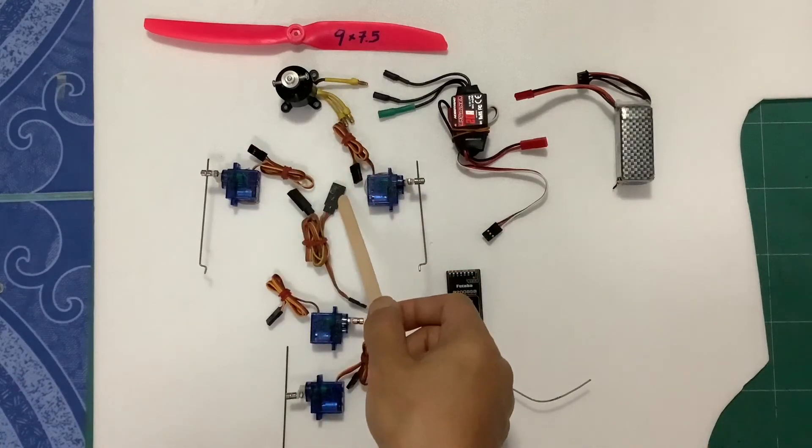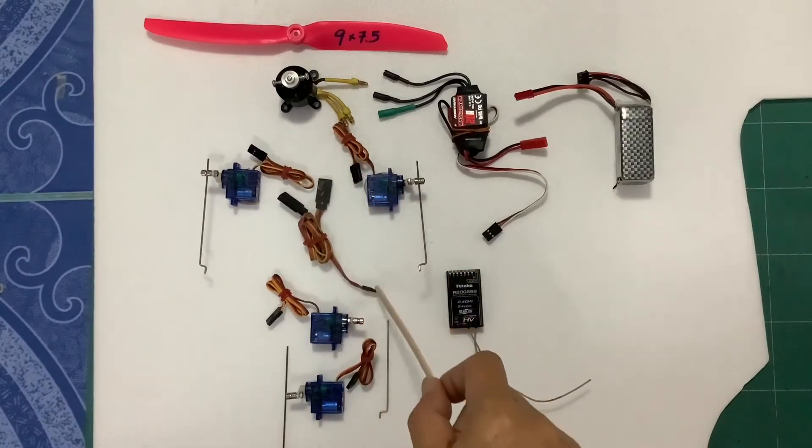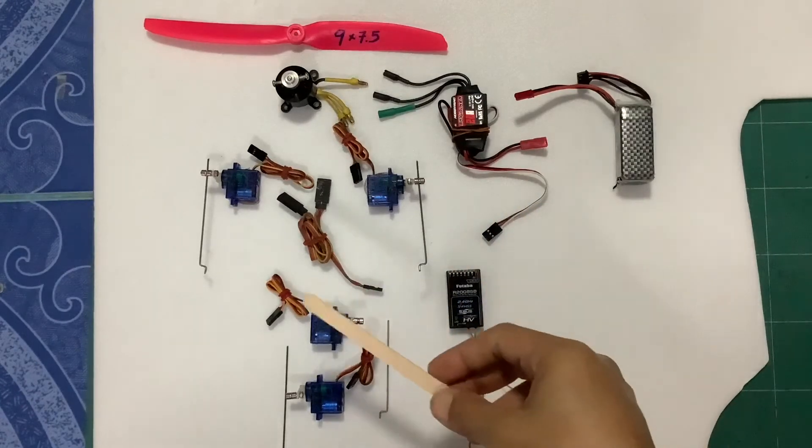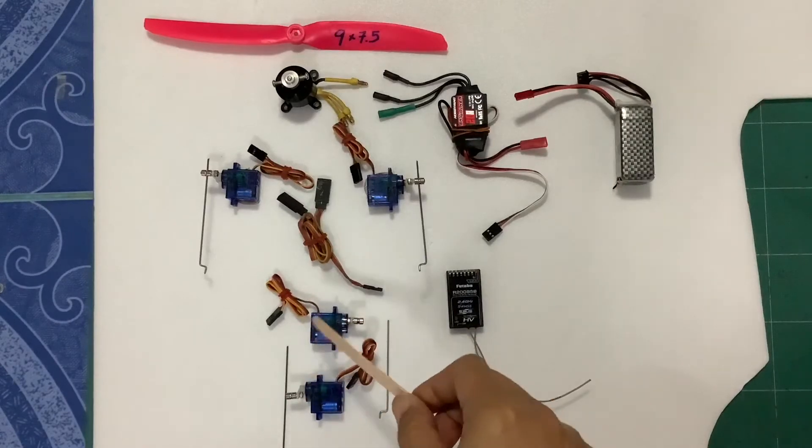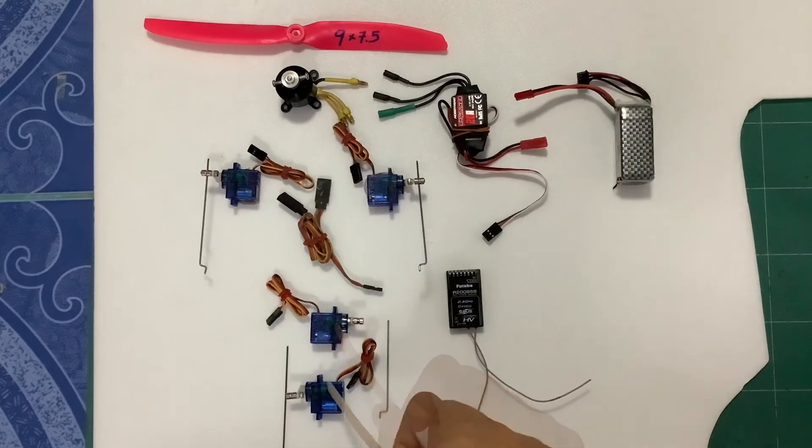Connect this one to this plug and there are one cable on this. Then go to the elevator and rudder. This servo will control the elevator.